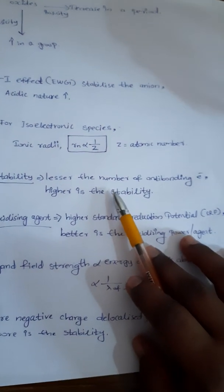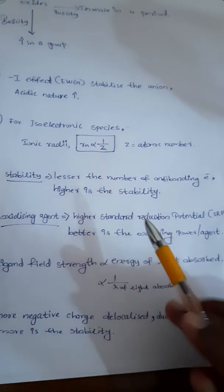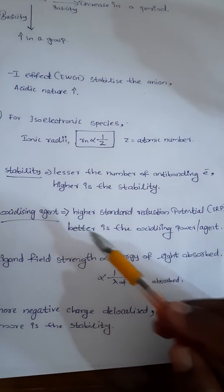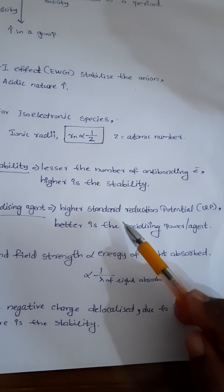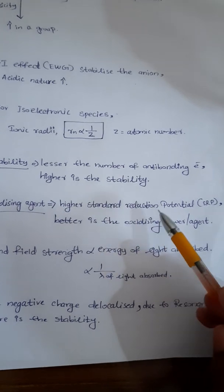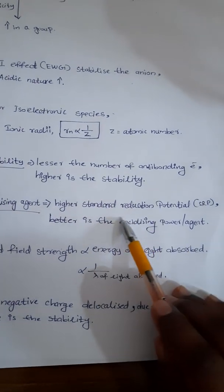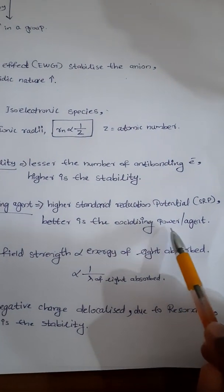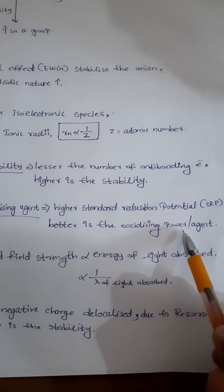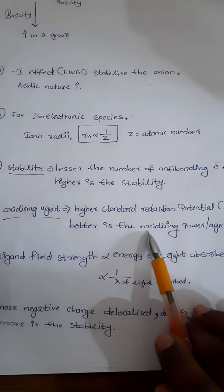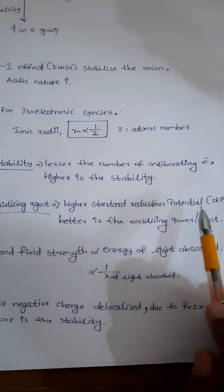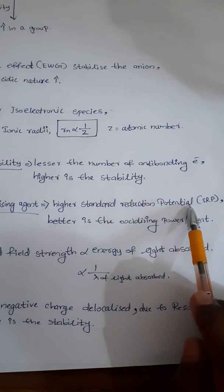Next one: oxidizing agent. Higher the standard reduction potential, then better is the oxidizing power or agent.